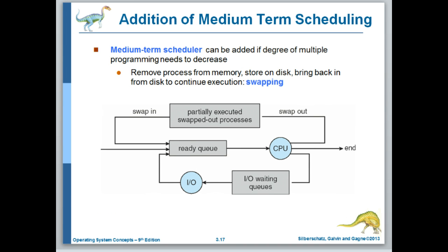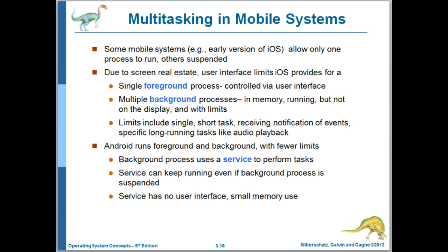Sometimes the long-term scheduler puts too many processes into the mix, at which point processes may be starving for resources, particularly memory. When that situation — called thrashing — occurs, the medium-term scheduler is called into play. It will select among the processes in memory, suspend some and page them out, freeing up memory for the remaining processes. I tend to think of the cron facility in Linux as a long-term scheduler, although cron doesn't really distinguish between CPU-bound or I/O-bound processes.